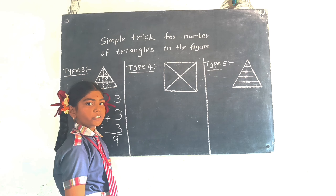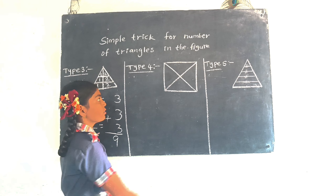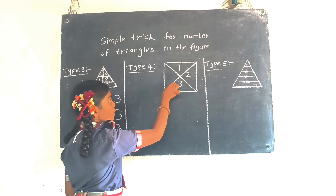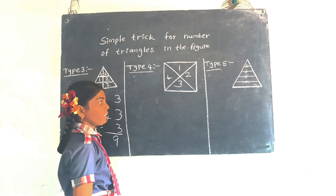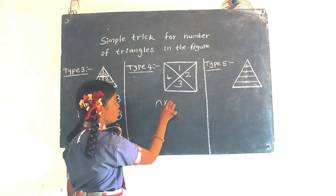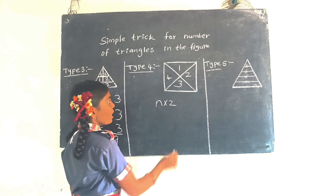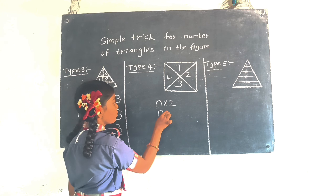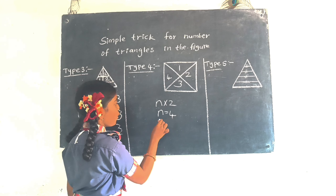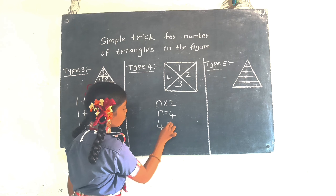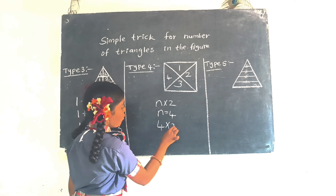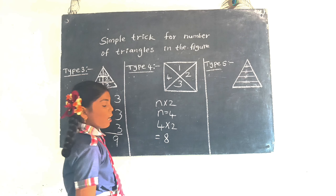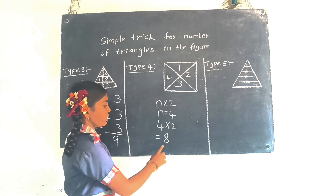Type 4 is the formula method. Count the sections: 1, 2, 3, 4. The formula is: ending number multiplied by 2. Here the ending is 4, so 4 into 2 equals 8. Number of triangles is 8.